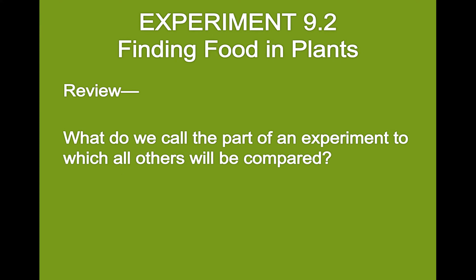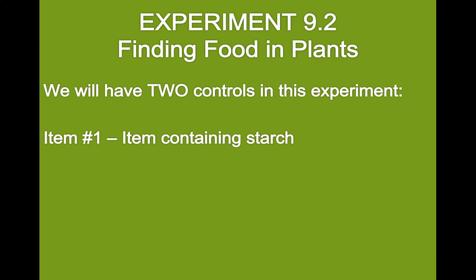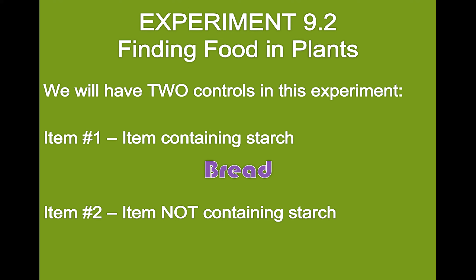Now let's do a little review. What do we call the part of an experiment to which all others will be compared? We're going to have two different controls in this experiment. One control shows us what something looks like when you put iodine on it if it does have starch, and the item we'll use for that is bread. Then we're going to have a second item that we all know does not contain starch, so we can see what happens when you put iodine on something without starch, and that is cheese. Cheese is a protein and does not have starch in it.